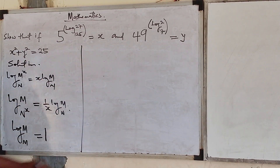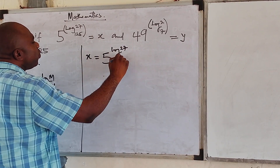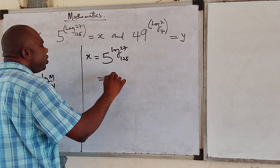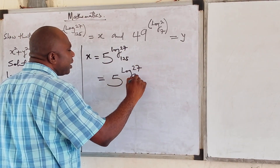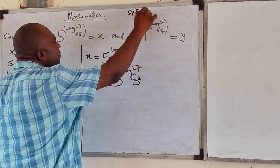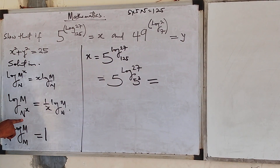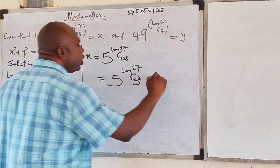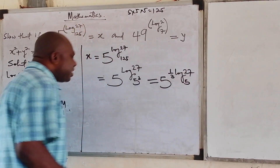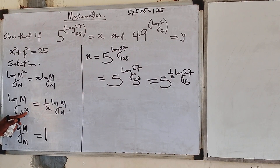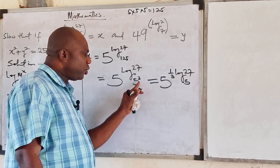Now looking at the value of x: we have x equals 5 raised to the power of log 27 base 125. The base 125 is the same as 5 to the power of 3, because 5 times 5 times 5 gives us 125. Now because the base n here — 5 — is carrying the power 3, taking it back gives us 5 raised to the power of 1 over 3 log 27 base 5.